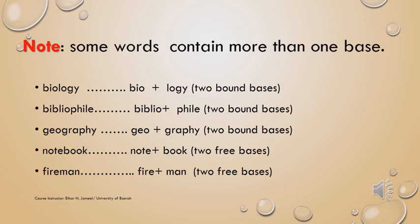A word like 'geography' consists of two morphemes: geo plus graphy. Geo means 'earth' and graphy means 'writing.' These two morphemes are not free morphemes — both of them are bound morphemes. We are talking about 'earth writing,' not earth only, so both of them carry the principal meaning of the word. That is why both geo and graphy are bound bases.